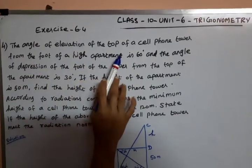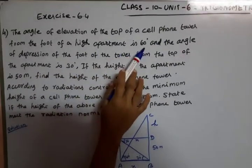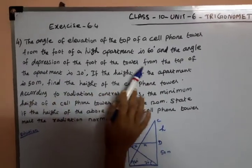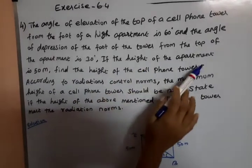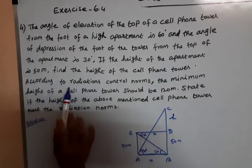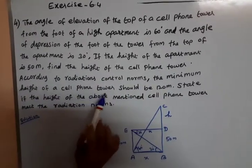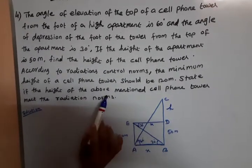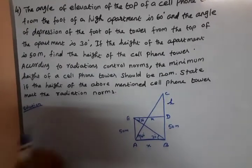The angle of elevation of the top of a cell phone tower from the foot of a high apartment is 60 degrees, and the angle of depression of the foot of the tower from the top of the apartment is 30 degrees. If the height of the apartment is 50 meters, find the height of the cell phone tower. According to radiation control norms, the minimum height of the cell phone tower should be 120 meters. State if the height of the above-mentioned cell phone tower meets the radiation norms.